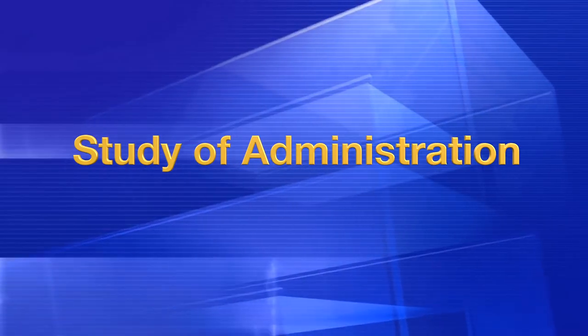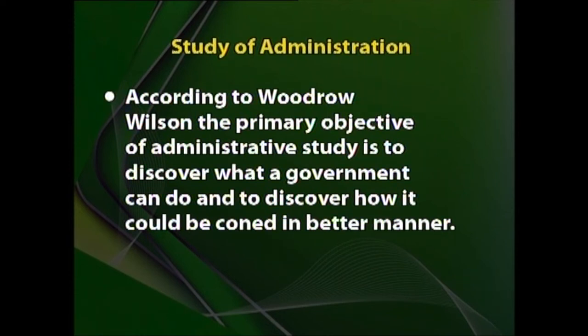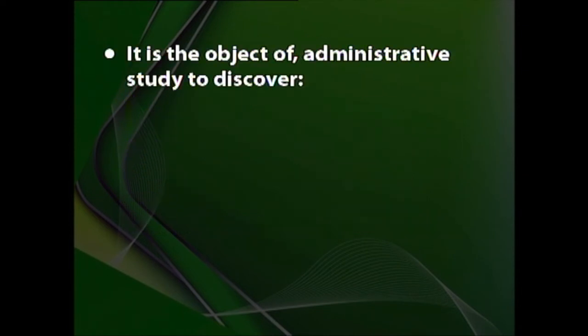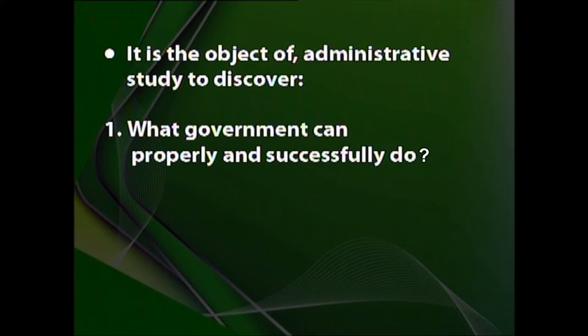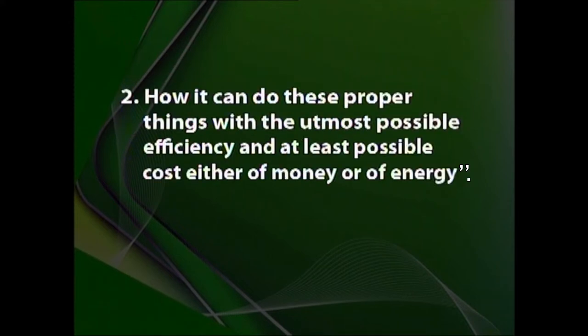According to Woodrow Wilson, the primary objective of administrative study is to discover what a government can do and to discover how it can be done in a better manner. To quote Wilson: 'It is the object of administrative study to discover, first, what government can properly and successfully do, and secondly, how it can do these proper things with the utmost possible efficiency and at the least possible cost, either of money or of energy.' He said we need to know how government will do things, how efficiently, and how economically.